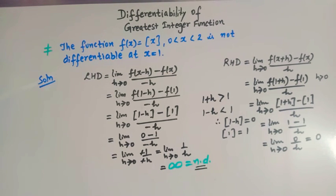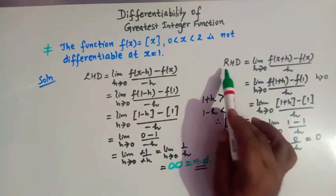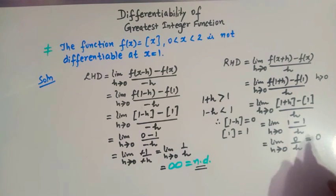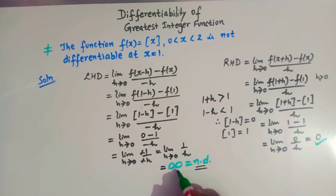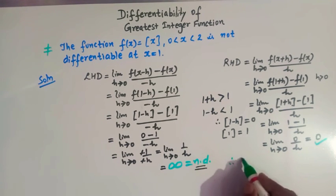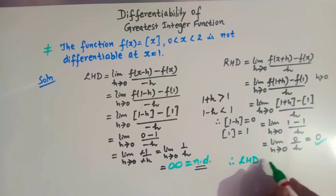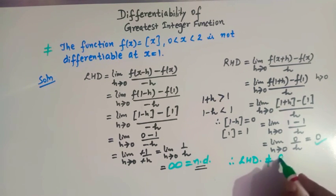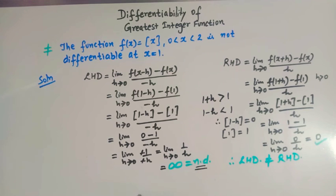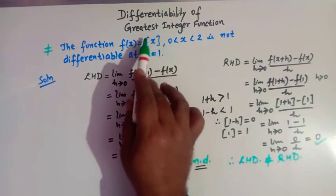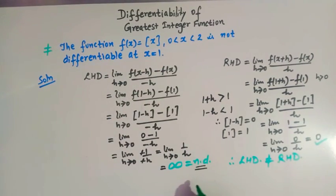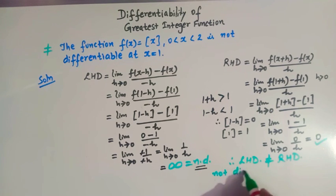We see that the right hand derivative is 0, but the left hand derivative is not defined. Therefore, the left hand derivative is not equal to the right hand derivative, and hence we can claim that the function f(x), which is the greatest integer function, is not differentiable at x = 1.